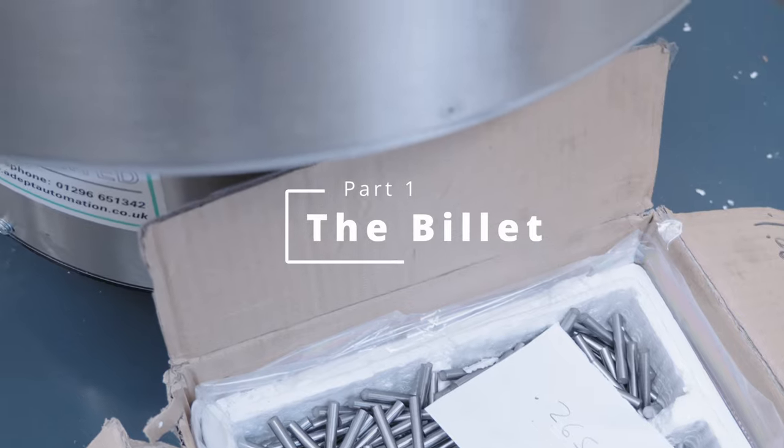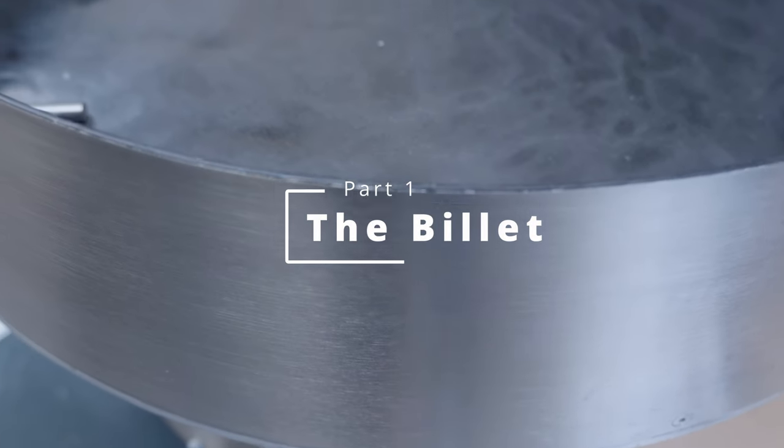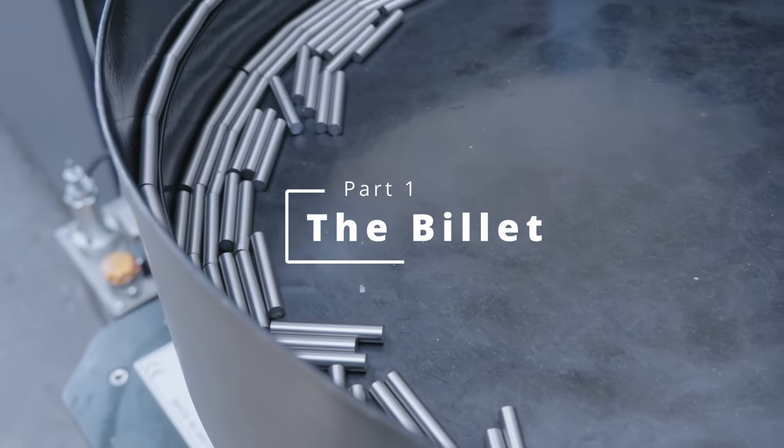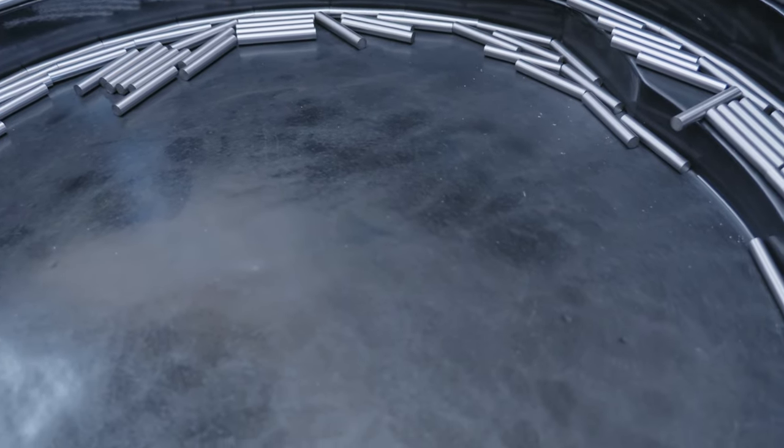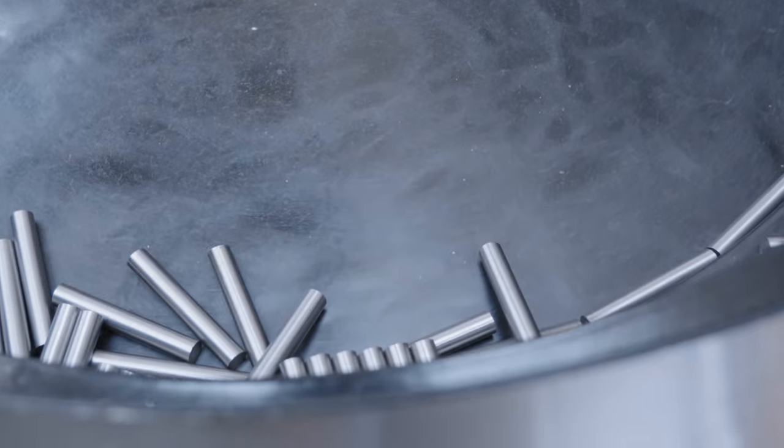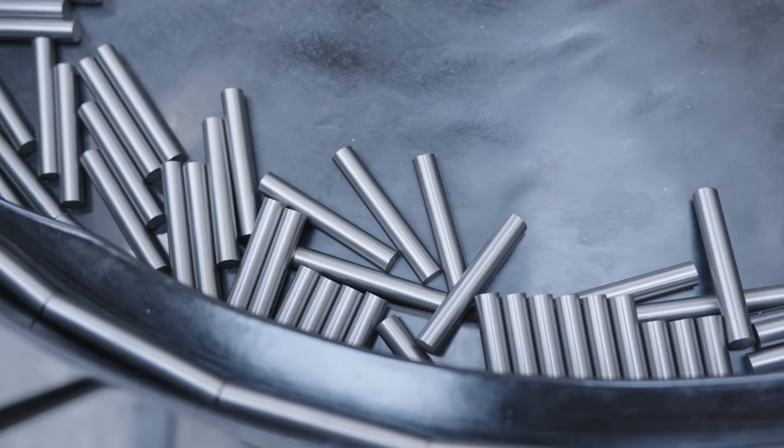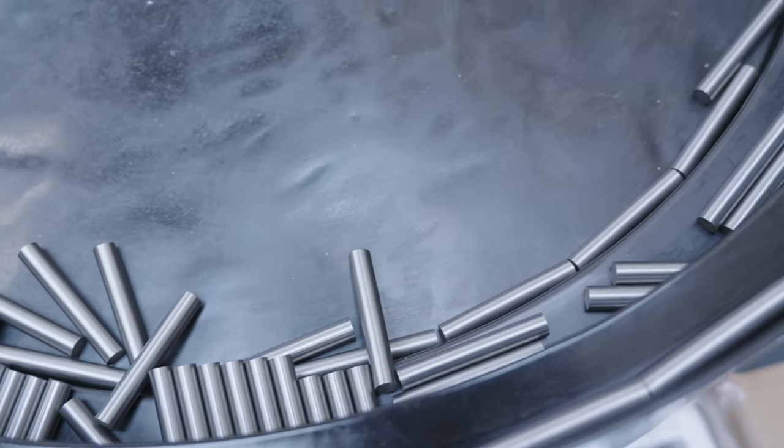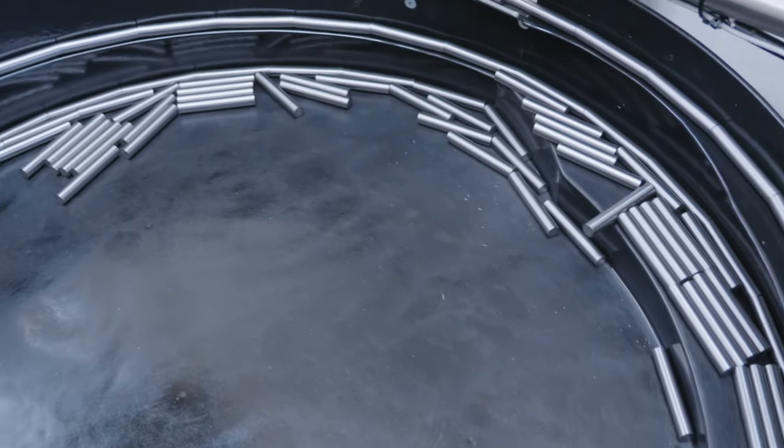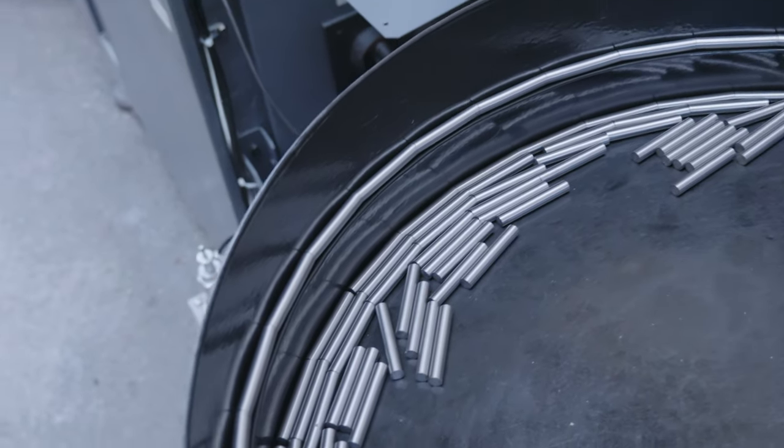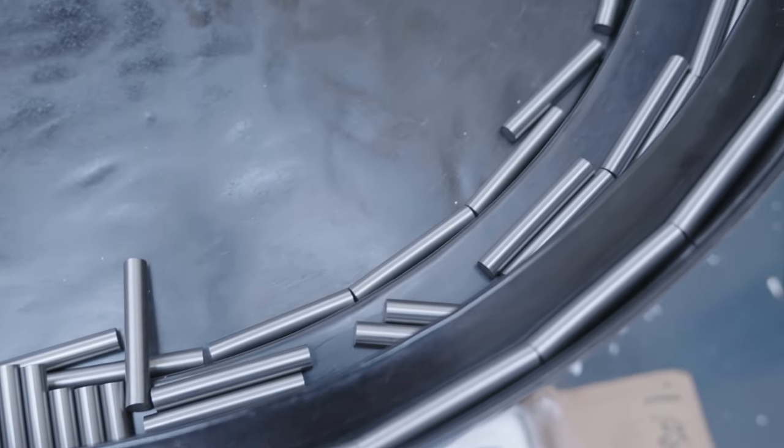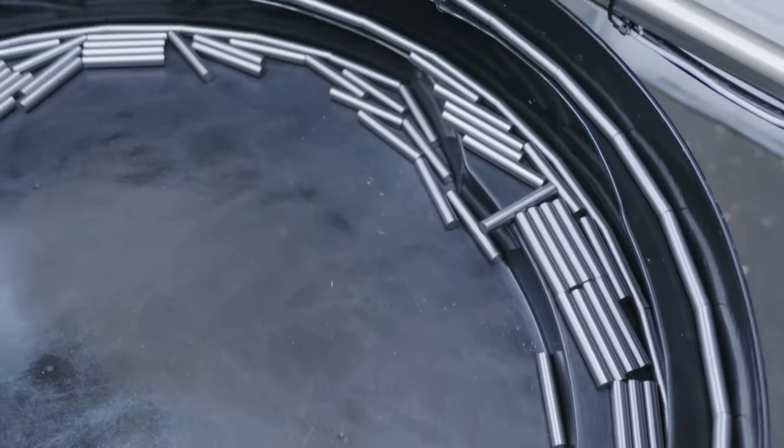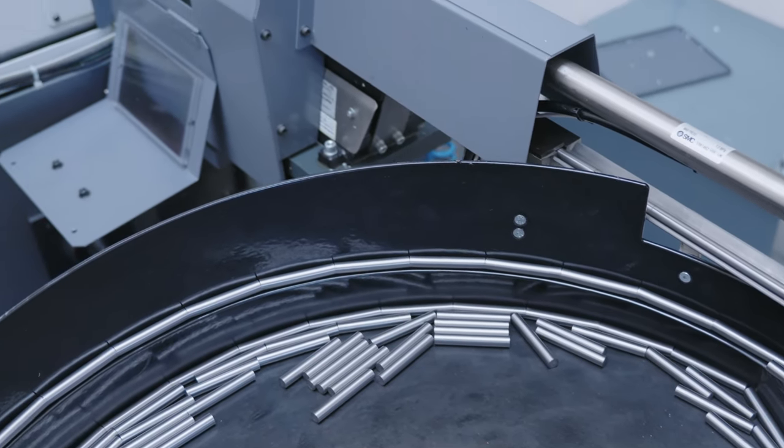Part 1: The Billet. Tungsten arrives at the factory in a billet. The billets come in all shapes and sizes and are pre-cut. You can see the raw cylinder shape here. They're placed in this drum and then work their way around the outside, progressing into the actual machine. It's funny to think that your tungsten darts actually started their life like this.